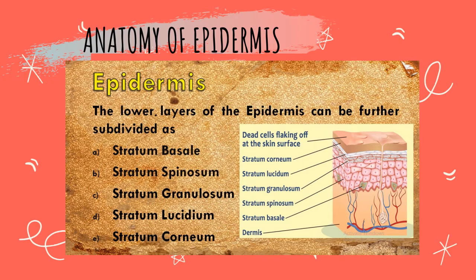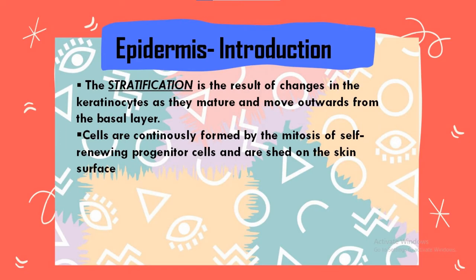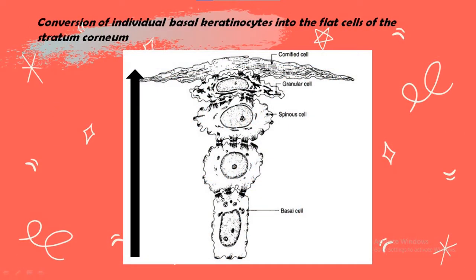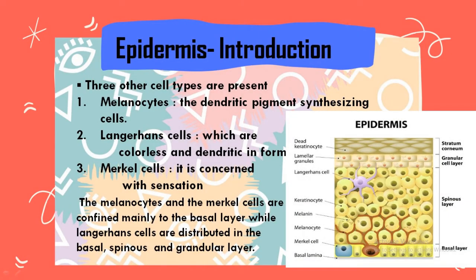This stratification is the result of changes in the keratinocyte as they mature and move outward from the basal layer. Cells are continuously formed by mitosis of self-renewing progenitor cells and are shed from the skin surface. There are three other cell types present: first, melanocytes, which are dendritic pigment-synthesizing cells; second, Langerhans cells, which are colorless and dendritic in form; and third, Merkel cells, which are concerned with sensation. Melanocytes and Merkel cells are confined mainly to the basal layer, while Langerhans cells are distributed in the basal, spinous, and granular layers.